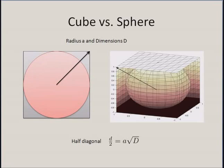Hello, welcome. Let us look at these two figures. The first figure shows a circle completely circumscribed by a square, and a sphere is completely circumscribed by a cube.